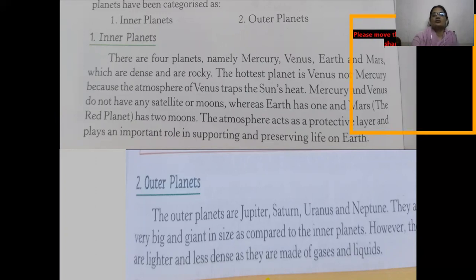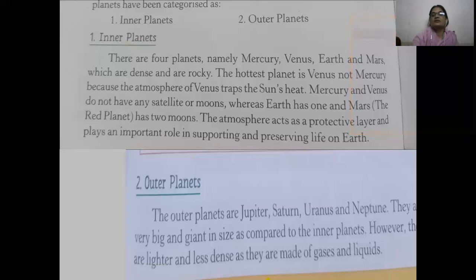The outer planets are Jupiter, Saturn, Uranus, and Neptune. They are very big and giant in size compared to the inner planets. They are less dense as they are made up of gas and liquids.